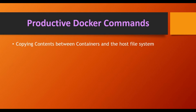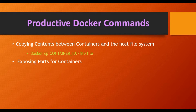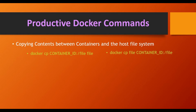To copy content between a container and the host file system, use docker cp. To copy from a container to the host: docker cp <container_id>:/path/to/file <host_path>. To copy from host to container, reverse the order: docker cp <file> <container_id>:/path. This is a handy command for moving files without entering the container.